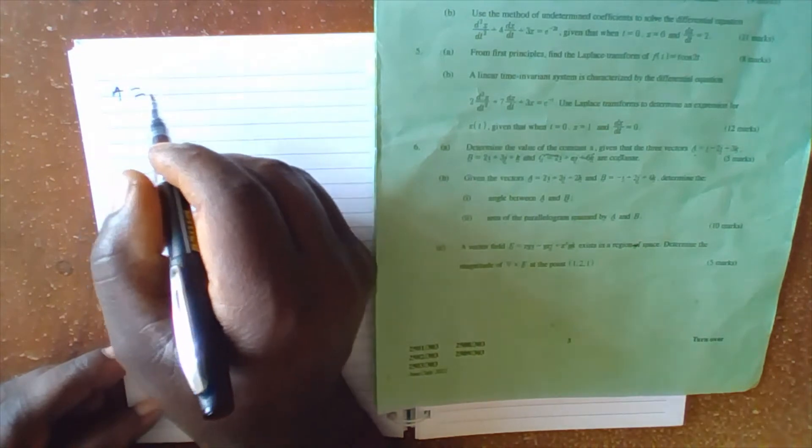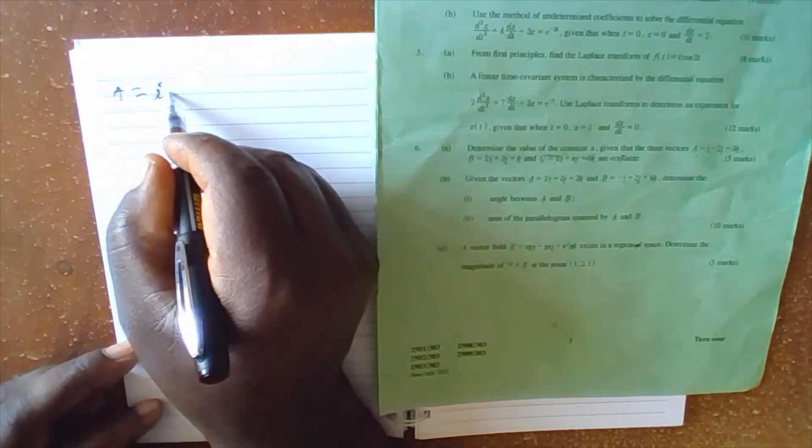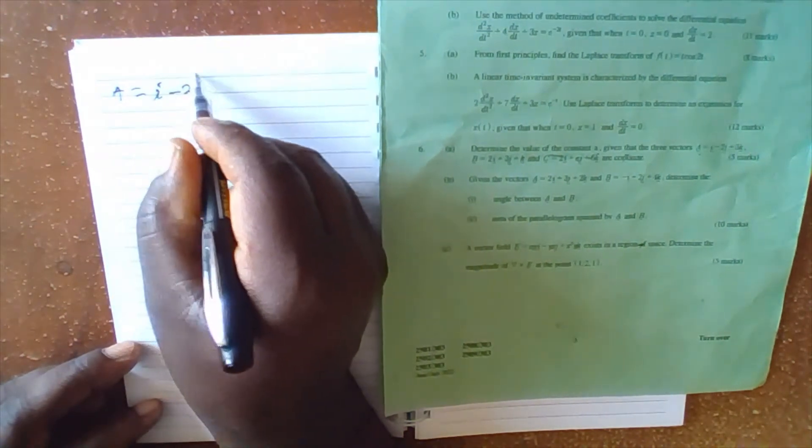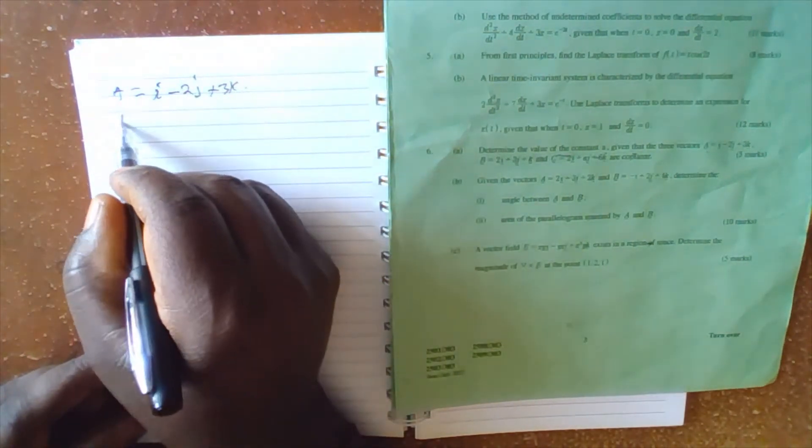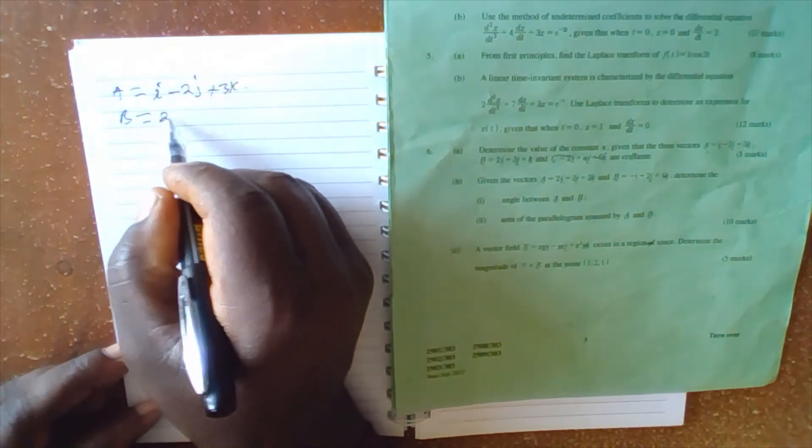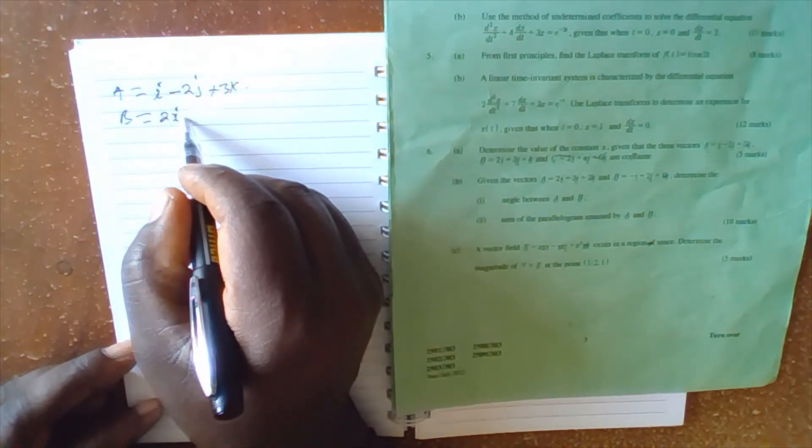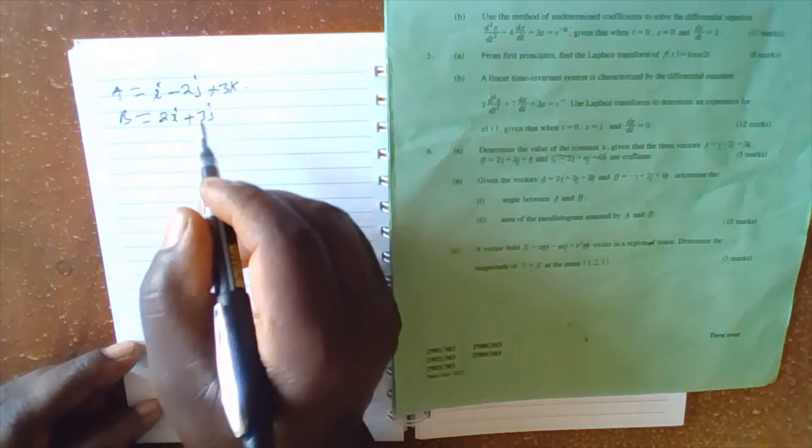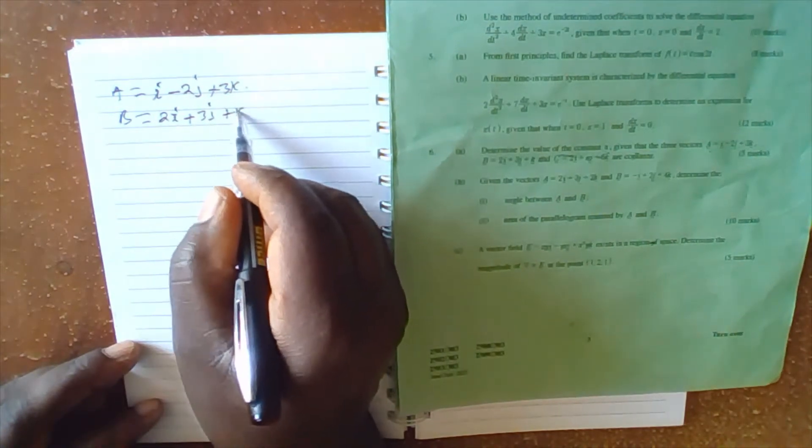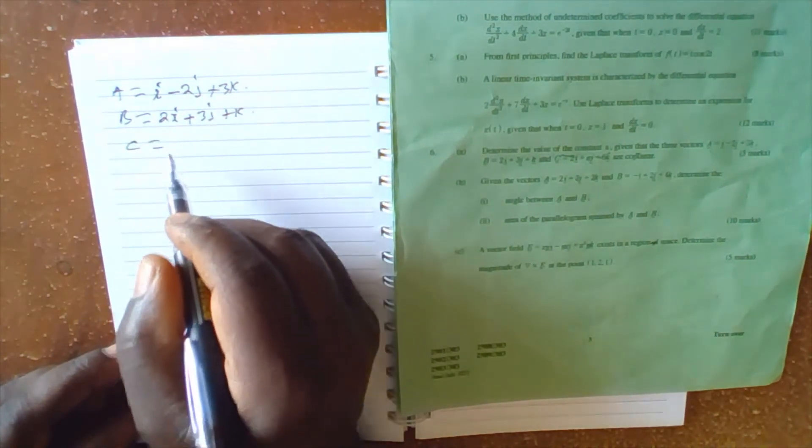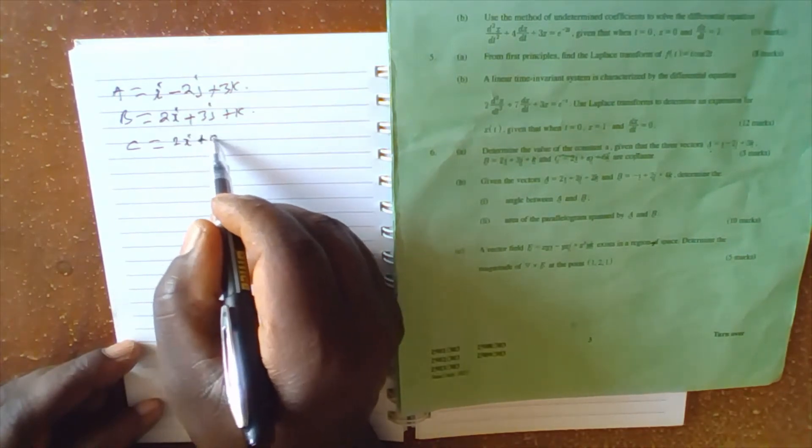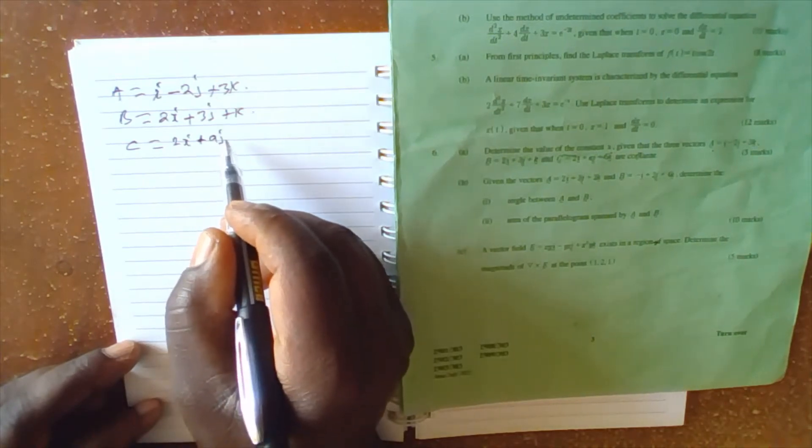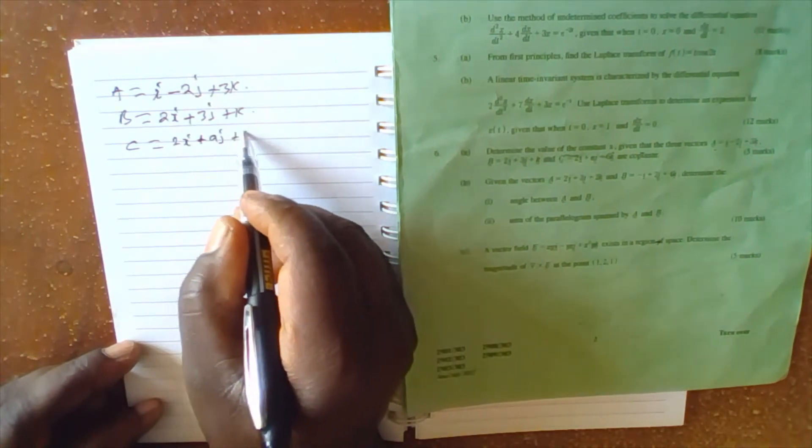Vector A is given by 1i minus 2j plus 3k. Vector B equals 2i plus 3j plus k. Vector C equals 2i plus aj plus 6k.